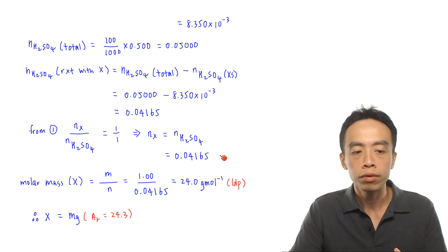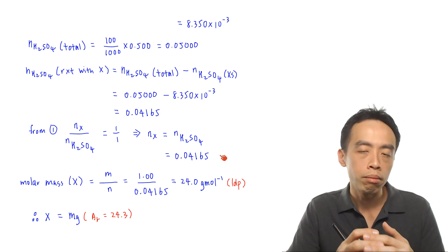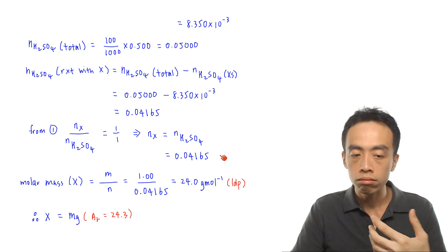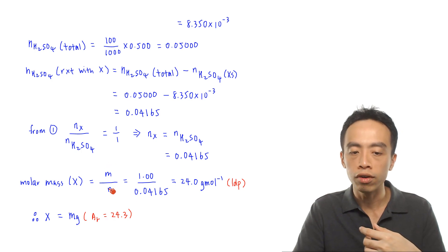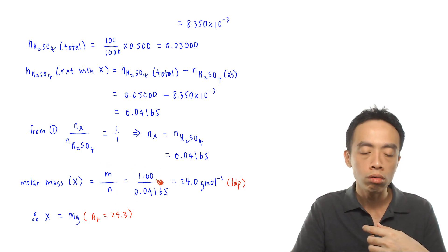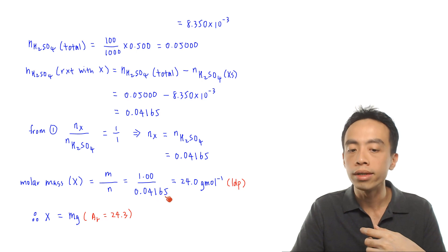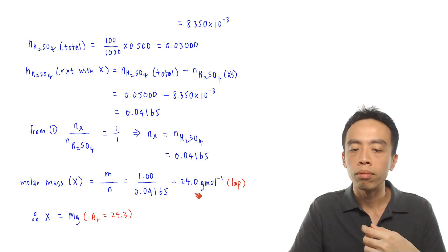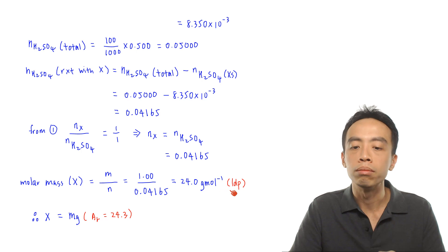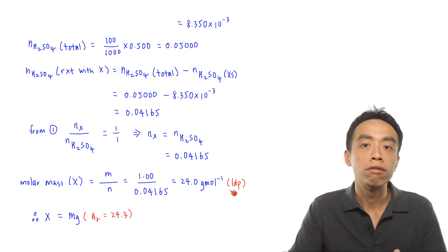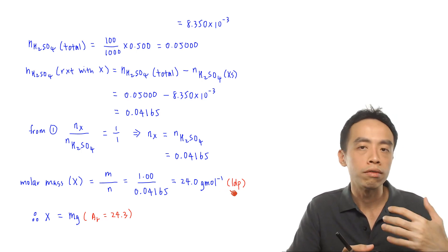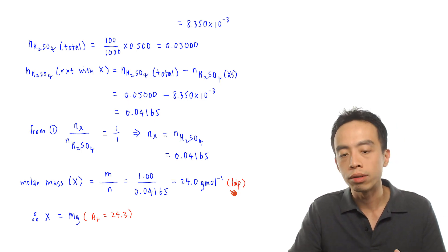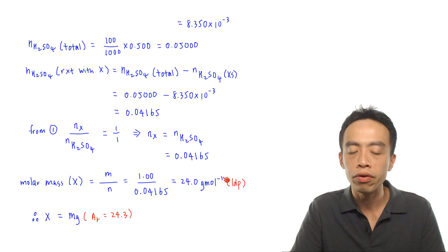Now that we have the moles of X and the mass of 1 gram, we can calculate the molar mass: molar mass = mass ÷ moles = 1 g ÷ 0.04165 = 24.0 g/mol. The unit for molar mass is grams per mole, and we round to one decimal place: 24.0 g/mol.